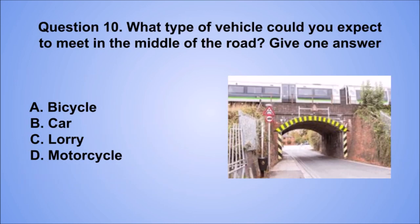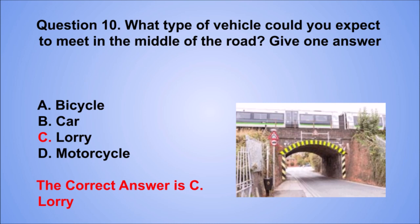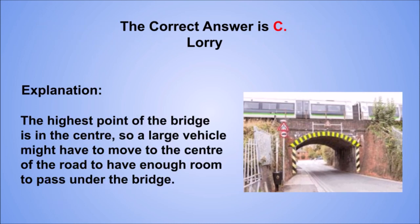Question 10. What type of vehicle could you expect to meet in the middle of the road? Give one answer. A. Bicycle. B. Car. C. Lorry. D. Motorcycle. The correct answer is C, lorry. The highest point of the bridge is in the center, so a large vehicle might have to move to the center of the road to have enough room to pass under the bridge.